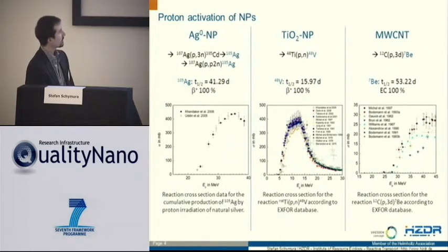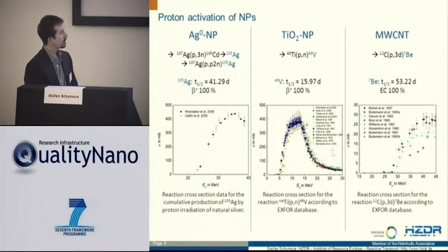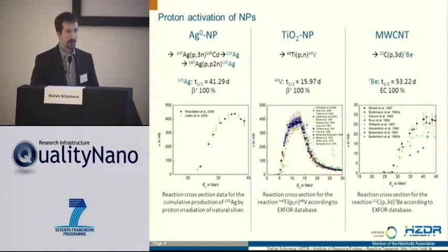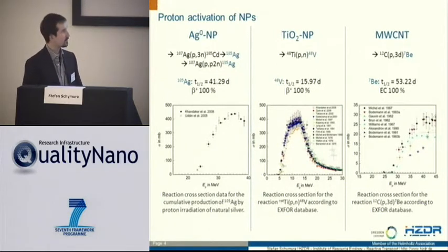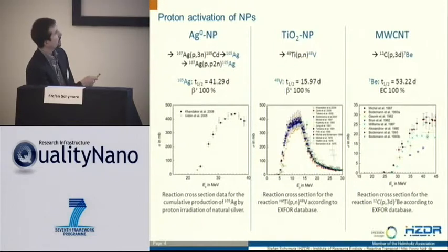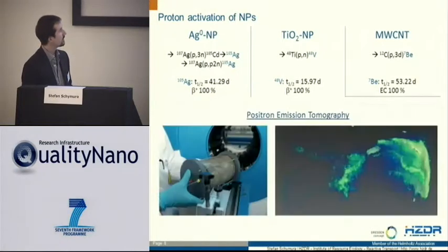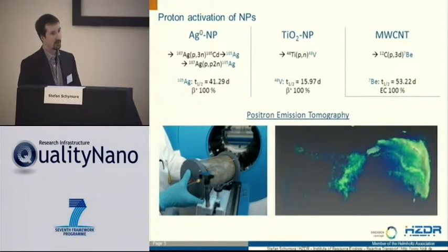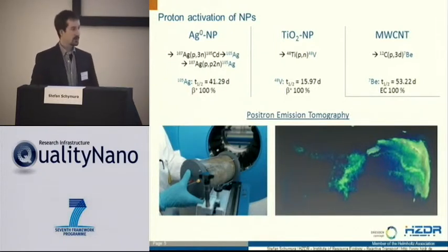If we look at the cross-sections for these nuclear reactions, we see that these are possible with the proton energy available at the JRC cyclotron. We can also see the decay mode of these particles — these are actually positron emitters, which in principle enable positron emission tomography, which is also planned.